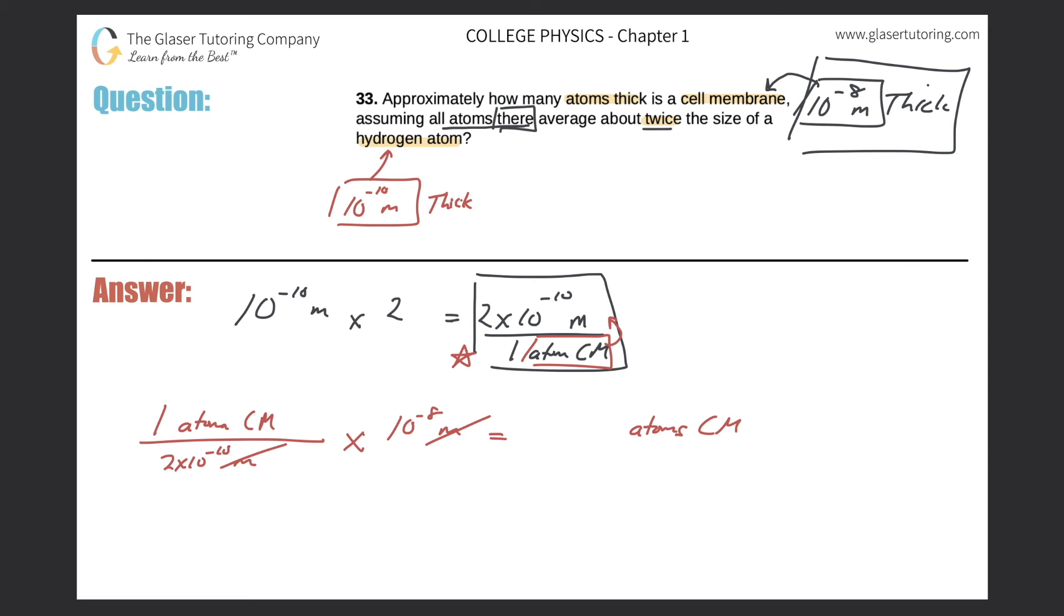Now all I need to do is do this math. So 10 raised to the negative 8, and then divide that by 2 times 10 to the negative 10, and we get an answer of approximately 50. So the cell membrane is approximately 50 atoms thick.